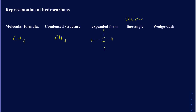The wedge and dash structure means when you have a carbon, you're going to have two bonds in the plane, and the other two bonds: one is going to be going into the page and the other one is going to be coming out of the page. The solid wedge comes out of the page, and the dash lines go into the page.